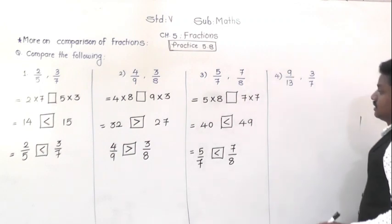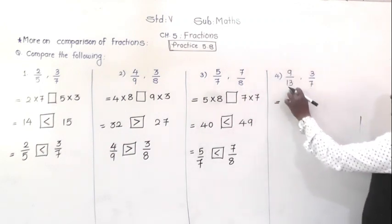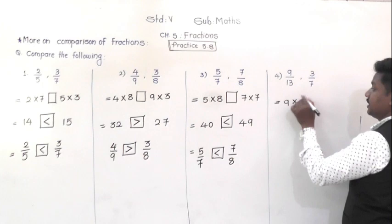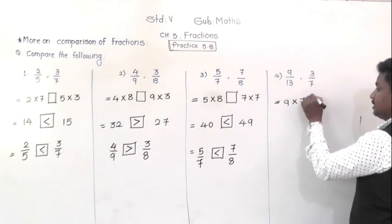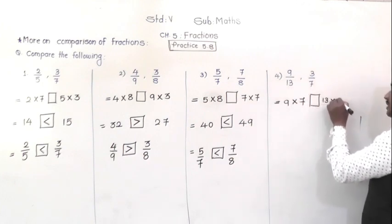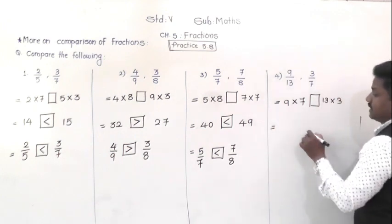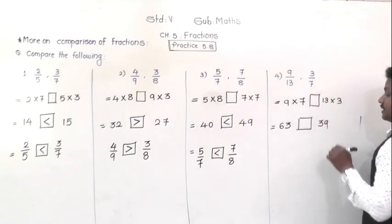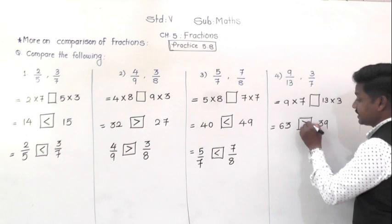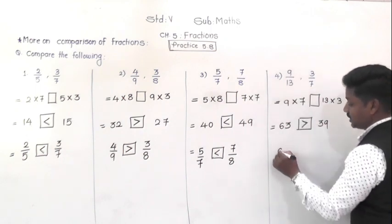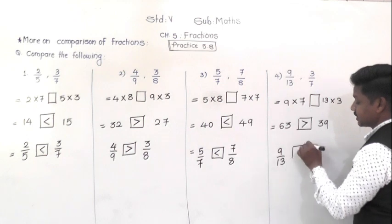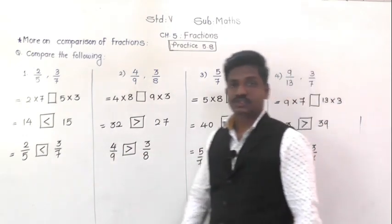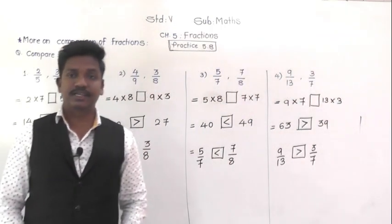Example 4: Compare 9/13 and 3/7. Cross multiply: 9 × 7 = 63 on the left, and 13 × 3 = 39 on the right. Since 63 is greater than 39, and 63 is on the left side, the fraction on the left side is greater. Therefore, 9/13 is greater than 3/7.